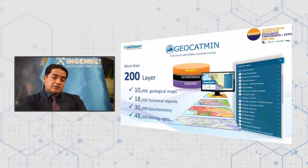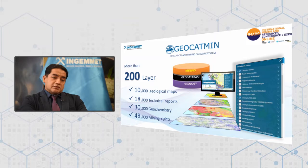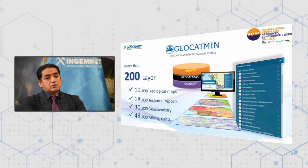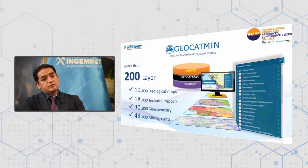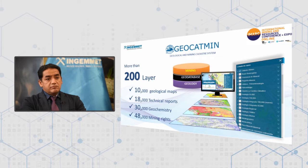This system is characterized by having a large amount of information: more than 200 layers of data, which include 10,000 integrated, standardized, and processed geological maps available for free downloading. Additionally, it contains more than 18,000 technical reports including records and bulletins, as well as data on geochemistry, geophysics, and more than 48,000 mining rights registered in the mining cadastre system.